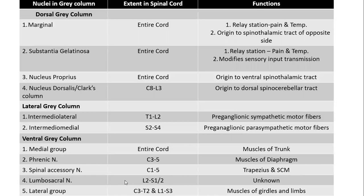The spinal accessory nucleus is associated with supply to the trapezius and sternocleidomastoid muscles. The lumbosacral nucleus is present at lower lumbar levels till upper sacral segments with an unknown area of supply. The lateral group is present at C3 to upper T2 and again at L1 to S3, supplying the muscles of the upper and lower limbs. The location, extent, and functions of these groups are often asked in university essay questions.